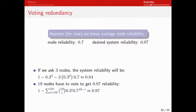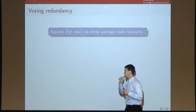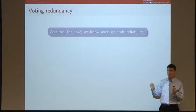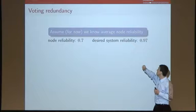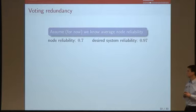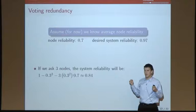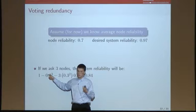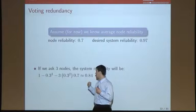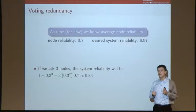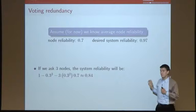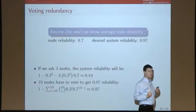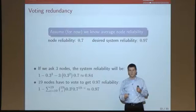Let's start with voting redundancy as a baseline — what happens when you just ask three or five nodes to vote. Assume node reliability is 70% and the target system reliability is 97%. If I ask three nodes, the probability of a reliable answer is one minus the probability all three failed minus the probability two of the three failed — giving us 84% confidence. To get to 97% reliability we'd need to ask 19 nodes. So we have to pay a factor of 19 to get to the desired reliability. That's our baseline to beat — and it turns out we can beat it by quite a bit.